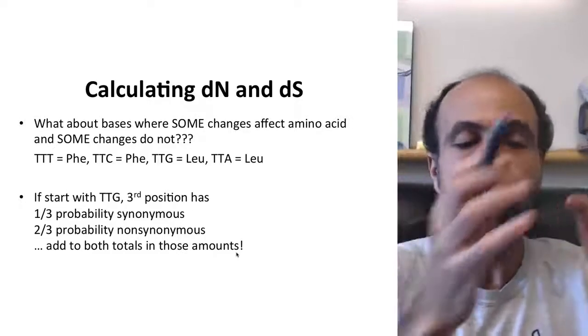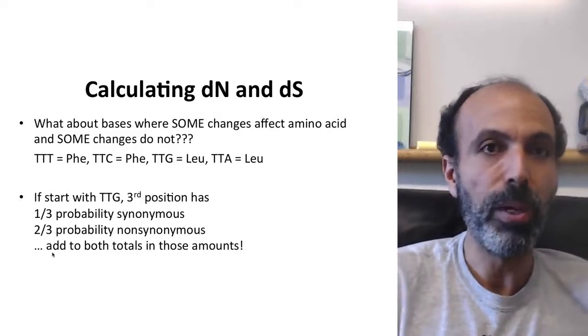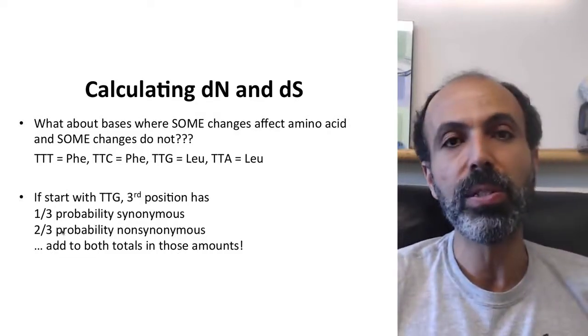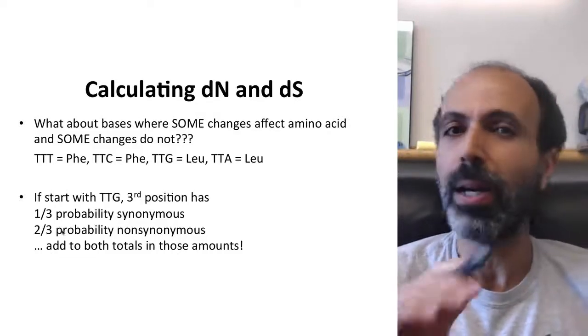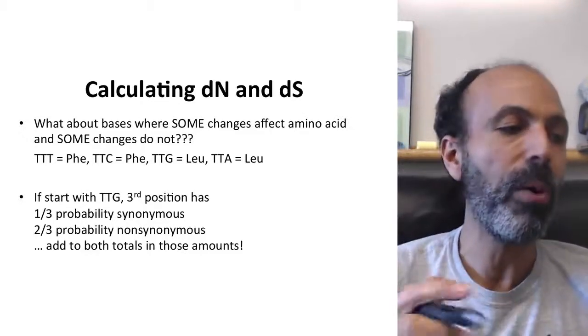So what you do is you add both those totals into those amounts. So in the synonymous column, where I had like the zeros and then the one, you just put a third. In the non-synonymous columns, where I had one, one, zero, you just make that one a two-thirds. So it's fairly straightforward. I'm not going to give you problems like that here in this online course, but I just want you to know what would happen in that case.